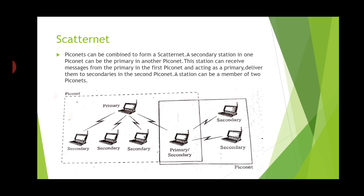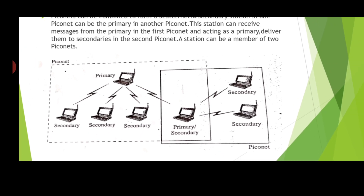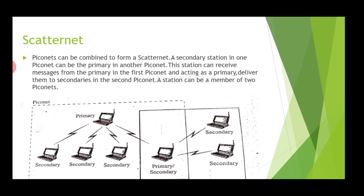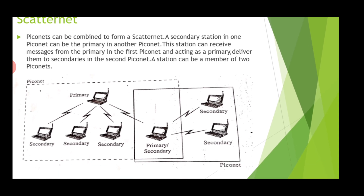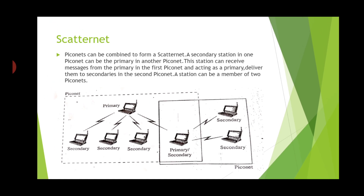Scatternet. Piconets can be combined to form a Scatternet. A secondary station in one Piconet can be the primary in another Piconet. This station can receive messages from the primary in the first Piconet and, acting as a primary, deliver them to the secondaries in the second Piconet. A station can be a member of two Piconets. In the diagram, the first Piconet has one secondary device that acts as a primary for the second Piconet. This is the Scatternet.